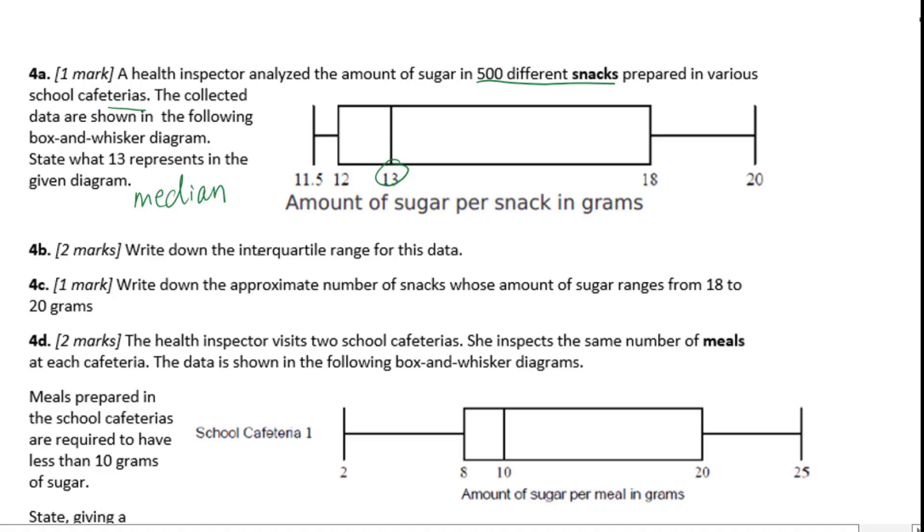For B, write down the interquartile range for this data. We know this is the minimum, maximum, the first quartile, and the third quartile. The interquartile range IQR equals Q3 minus Q1, which means 18 minus 12 equals 6.